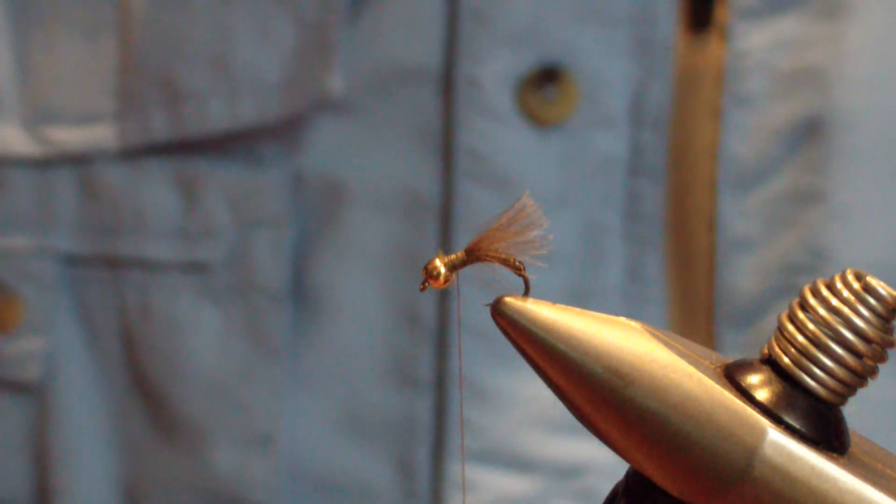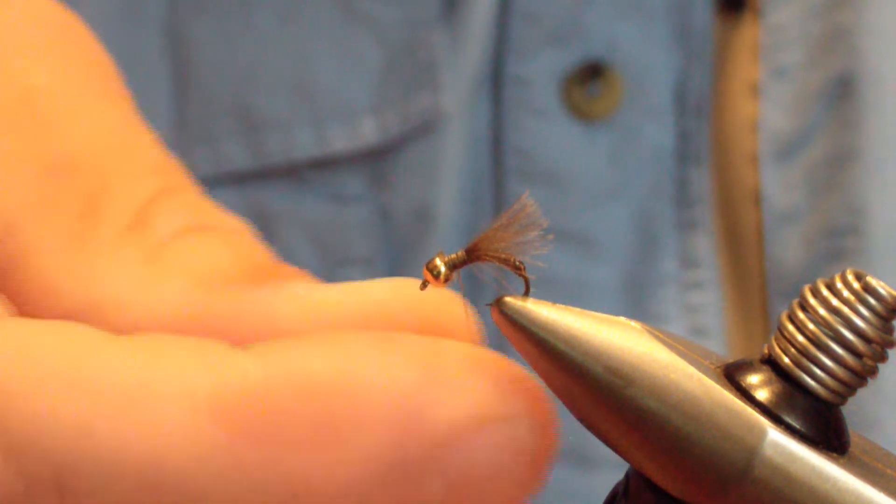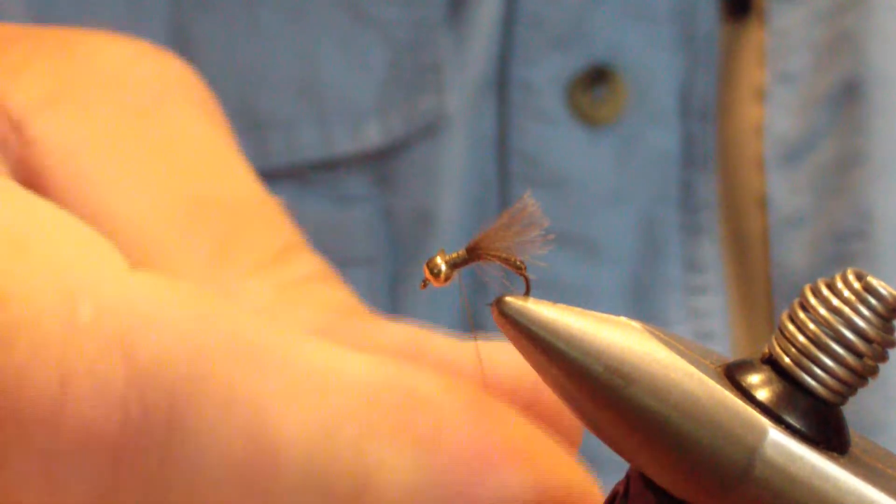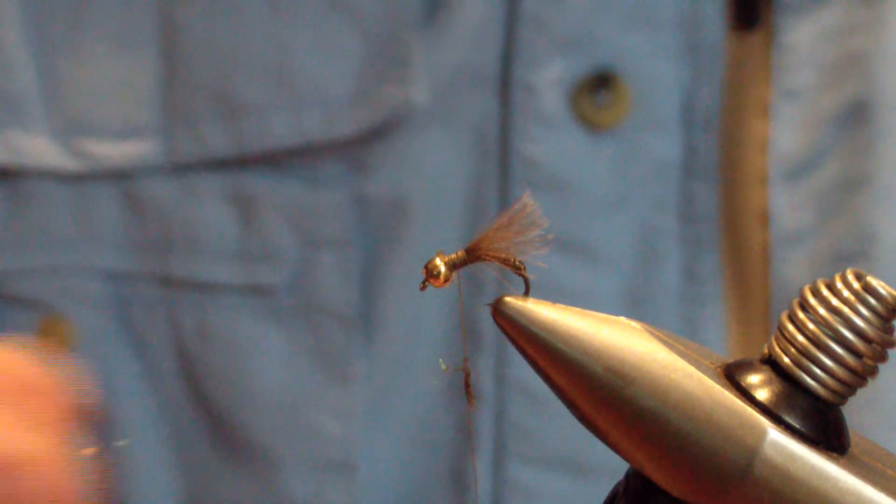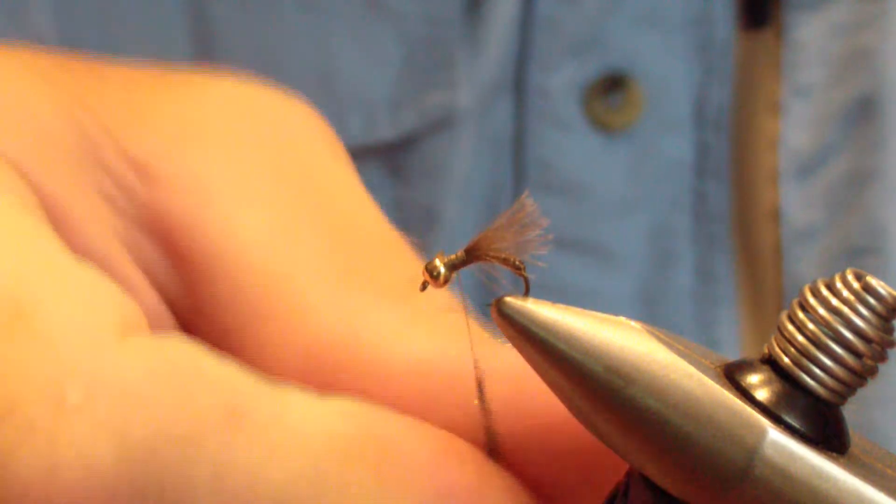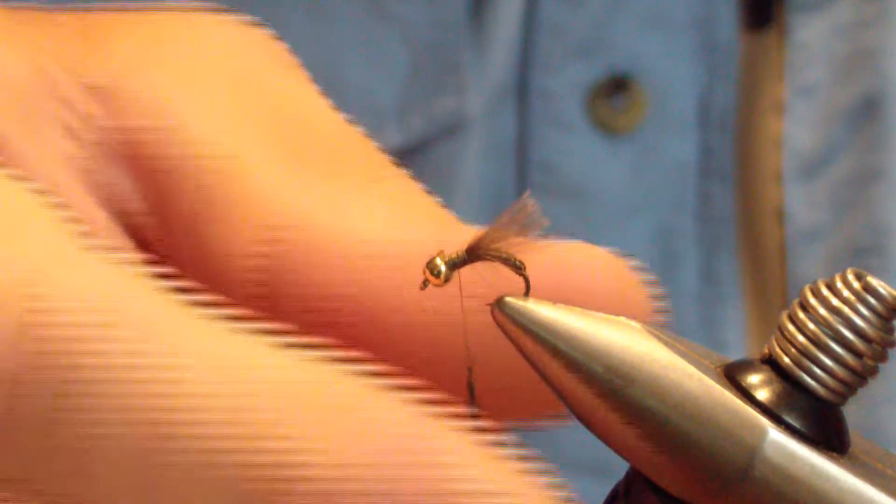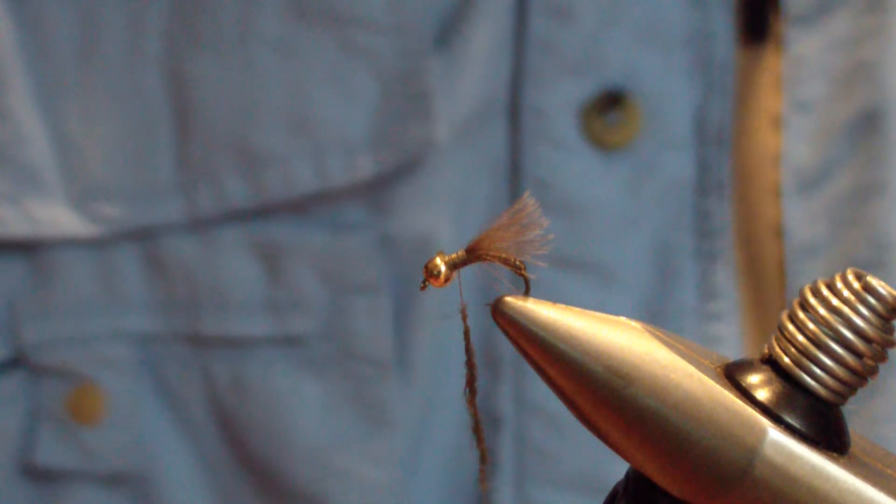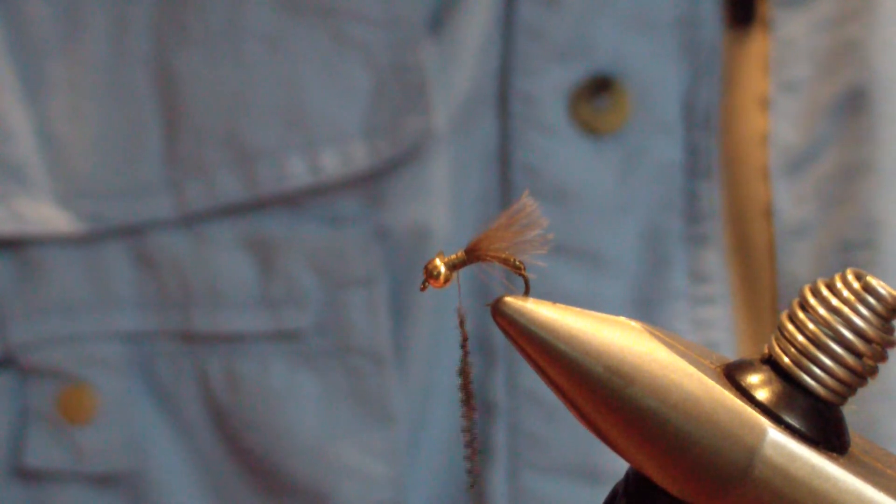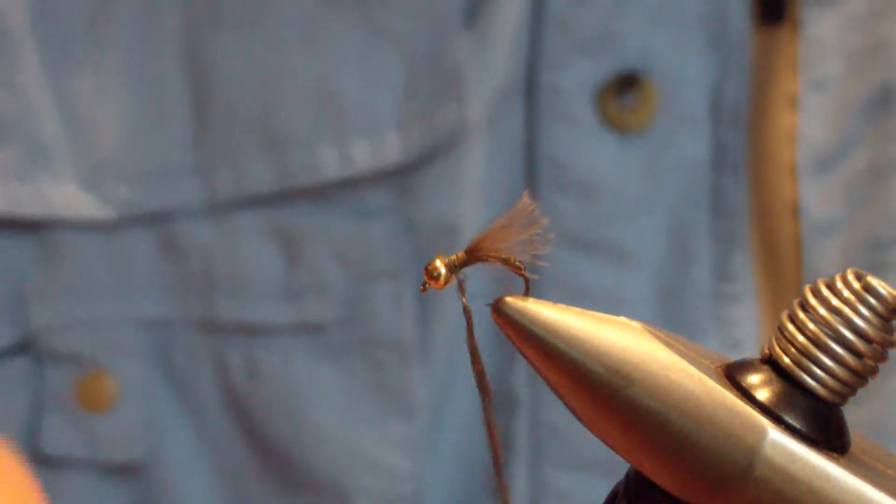The next material you're going to tie in is olive ice dub. You're not going to need a lot of it—it's not a large pattern. This is the only size I tie this pattern in, by the way: a 16. I stock it in my box. It works every year and is one of my go-to patterns.